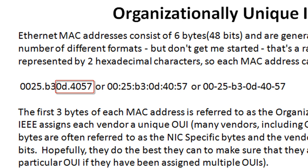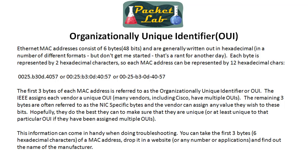If you do the quick binary math, 2 to the 24th power is about 16 million — so that's a lot of devices. But because we're talking about anything that connects to an Ethernet network, 16 million runs out pretty quickly. If you're a manufacturer of network interface cards and there are billions of devices out there, you're going to need more than 16 million. So a lot of times you'll see the IEEE assign multiple OUIs to a specific vendor, and Cisco is one of those vendors.